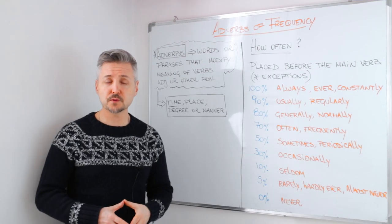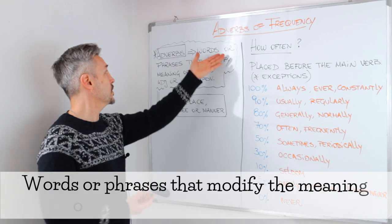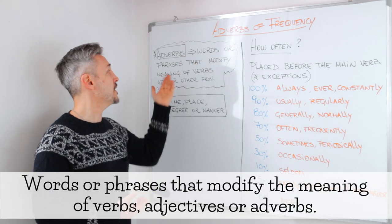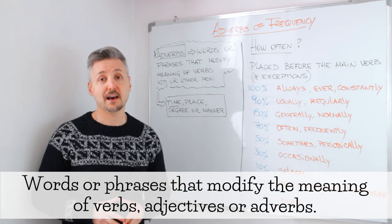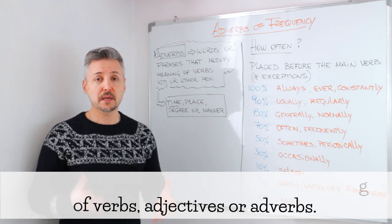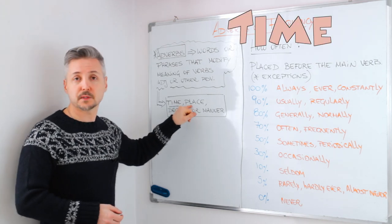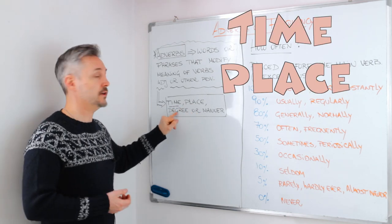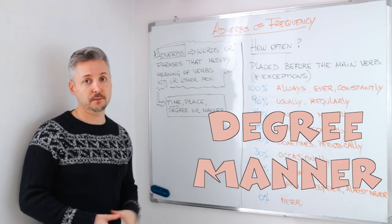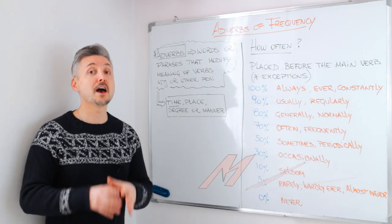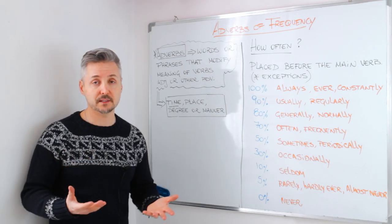Let me start first with the meaning of adverbs. What are they? They are words or phrases that modify the meaning of verbs, adjectives, or even adverbs. There can be adverbs of time, adverbs of place, adverbs of degree, and adverbs of manner. In this lesson, we're going to talk about adverbs of time, or adverbs of frequency.